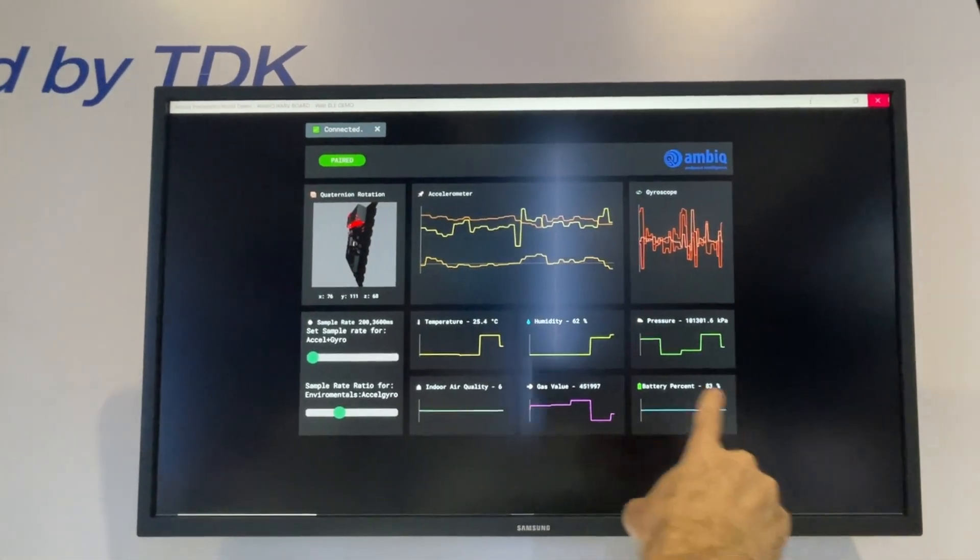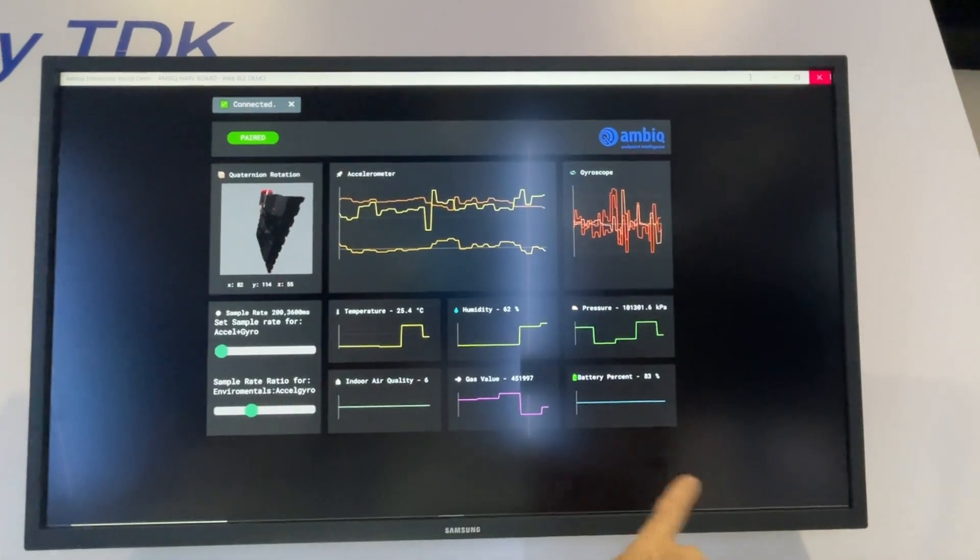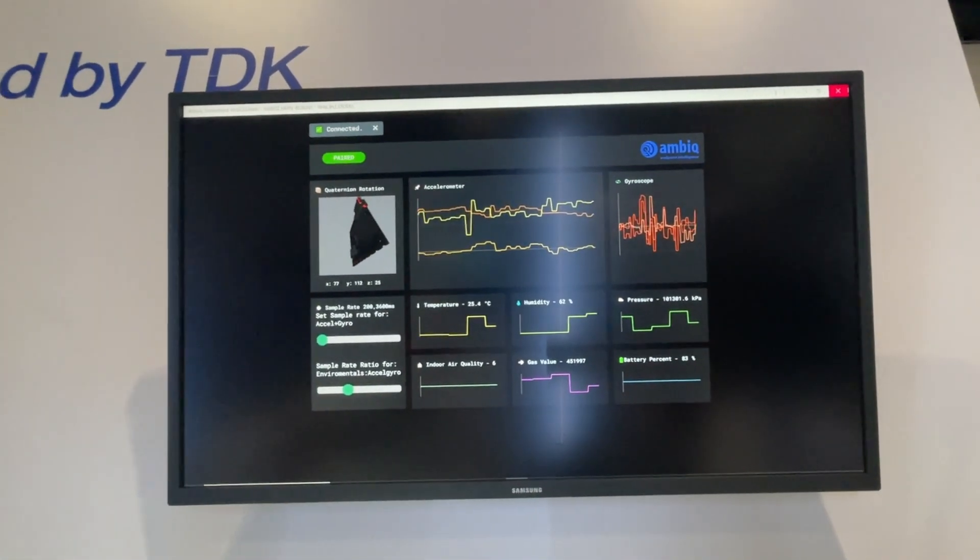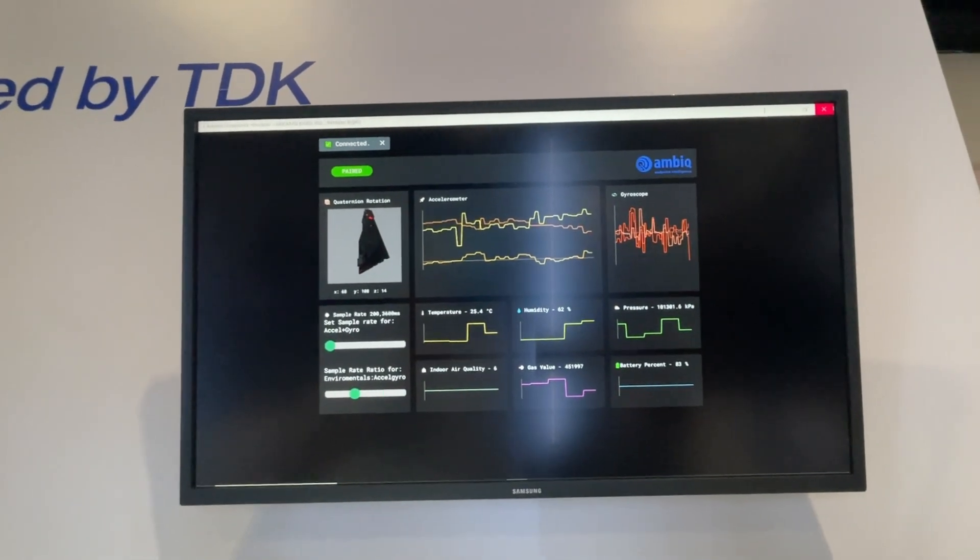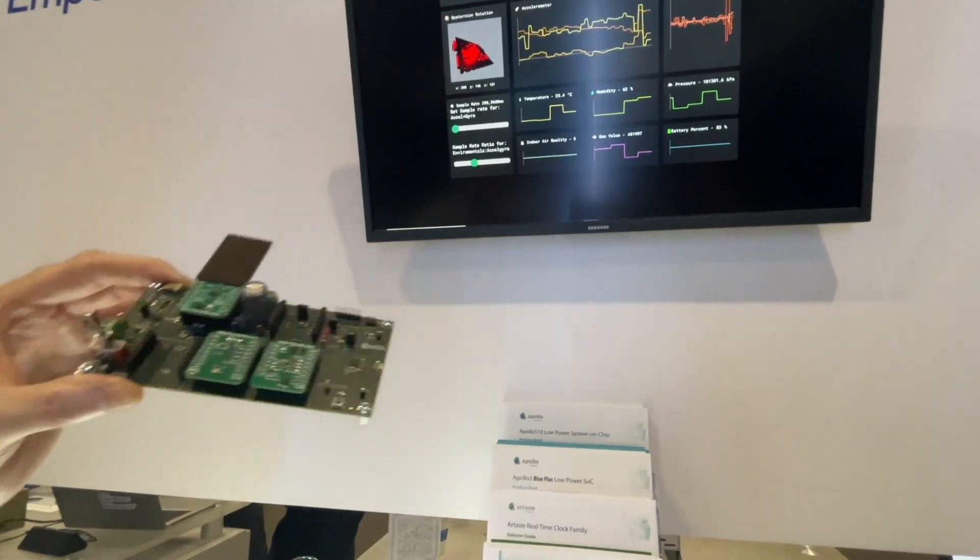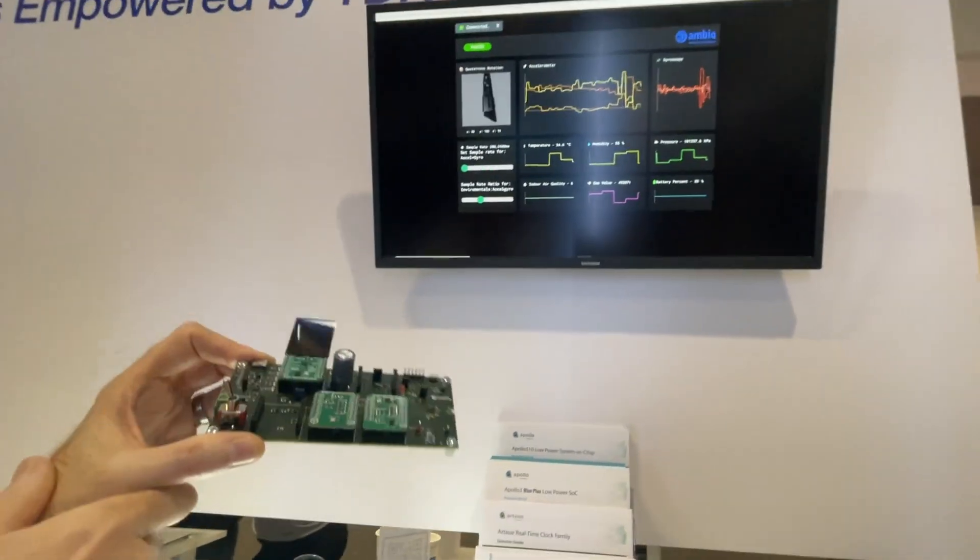Over here we can see the battery percentage, and that's the representation of the voltage level on the super cap. You can watch that slowly drain as code is being executed, or if it's exposed to a good amount of light you can watch the voltage on the capacitor slowly increase.